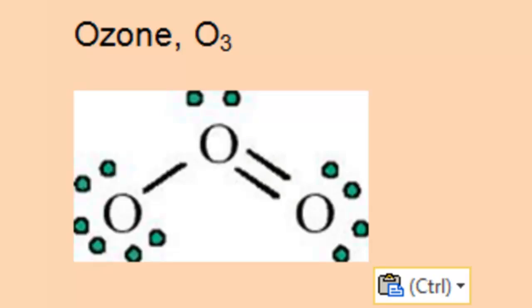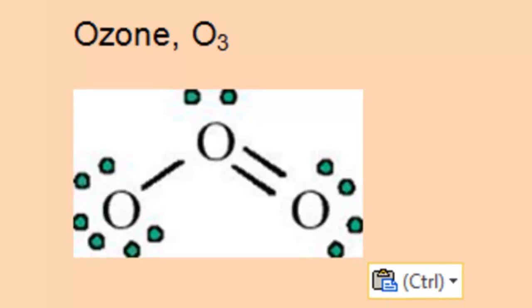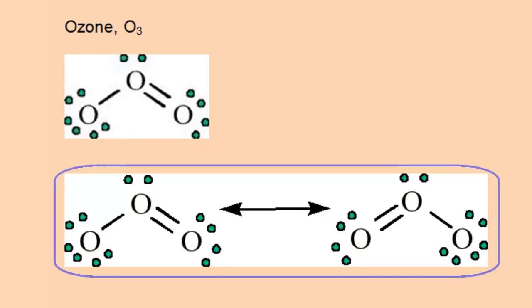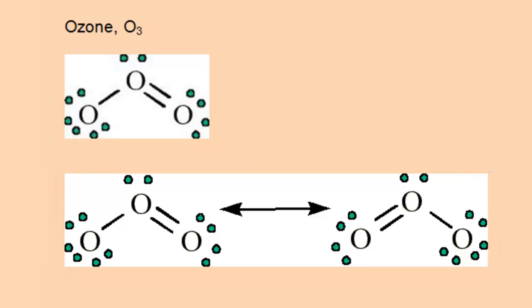If that's the case, that the double bond could be between the other two oxygens, we could come up with another Lewis structure for ozone. These two Lewis structures are called resonance structures, and it's customary to put a double-headed arrow between two resonance structures.